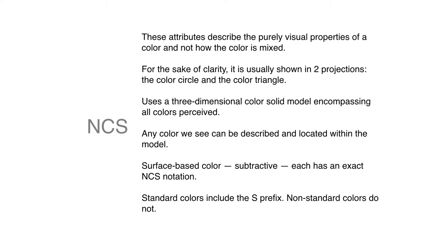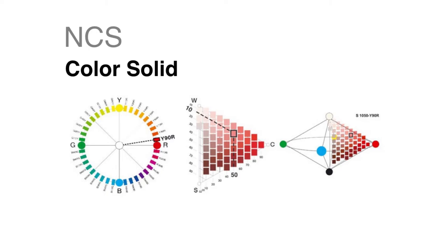The NCS also uses a three-dimensional color model, and any color that we can perceive can be mapped within this color solid. NCS is mainly subtractive, and there are standard colors, and there are non-standard colors. So colors can always be added into the NCS system, but they may not be noted as standard NCS colors.